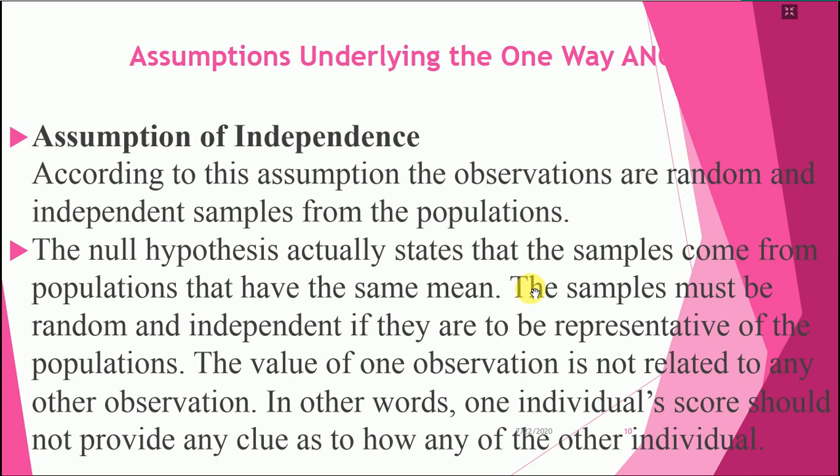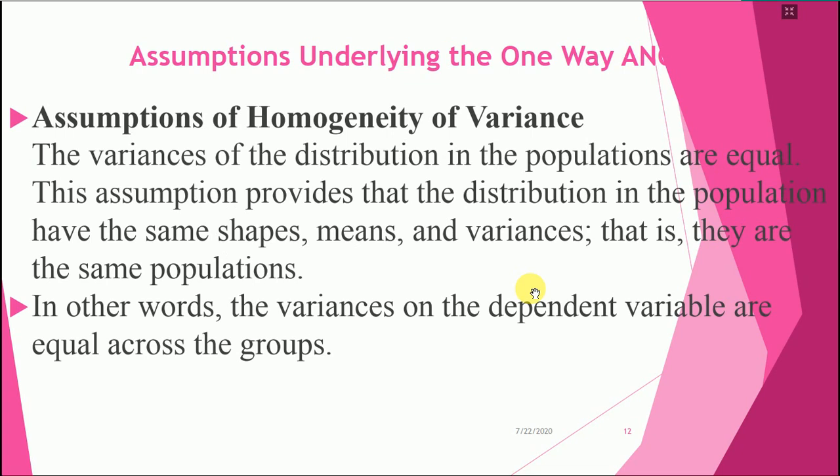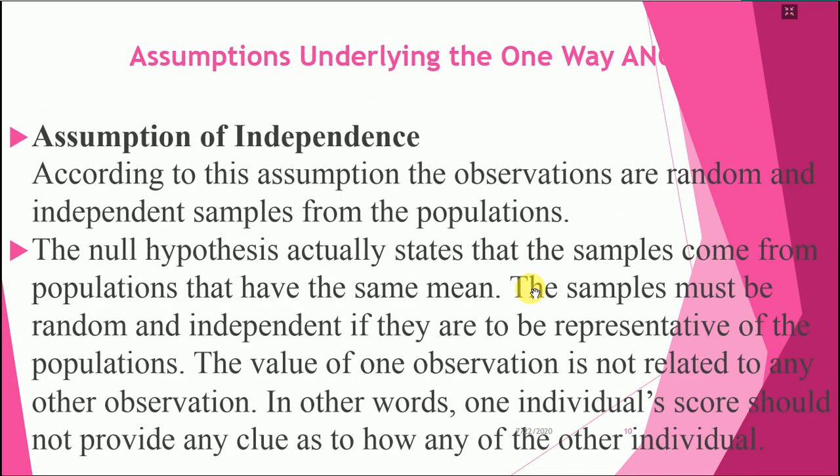Now we will talk about assumptions underlying the one-way ANOVA. What is the one-way ANOVA? What are the assumptions? The first assumption is independence — samples taken from the population must be independent and random. The second is normality. The third is homogeneity of variance.